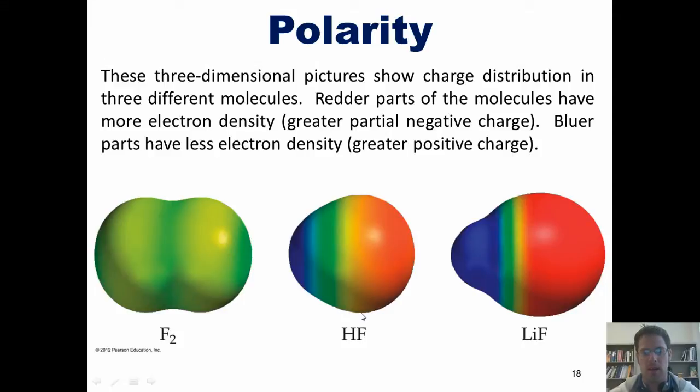In hydrofluoric acid, which is a covalent compound, the fluorine is much more electronegative than the hydrogen, and thus, the majority of the electron density winds up on the fluorine side of the molecule, leaving a very strong partial positive charge on the hydrogen side.